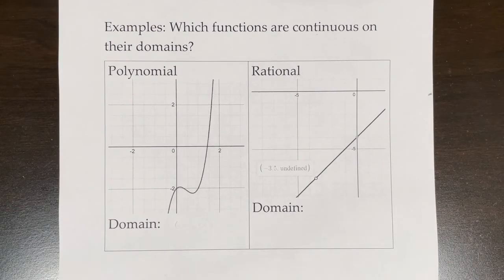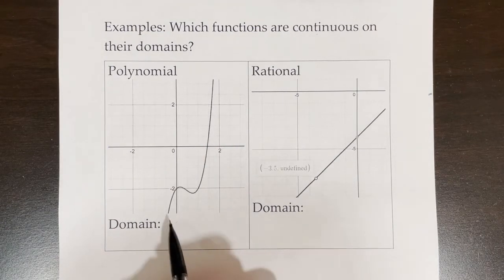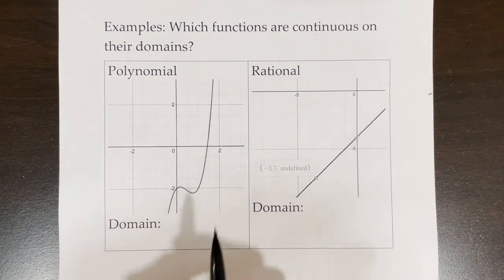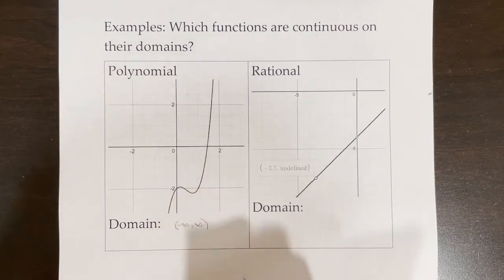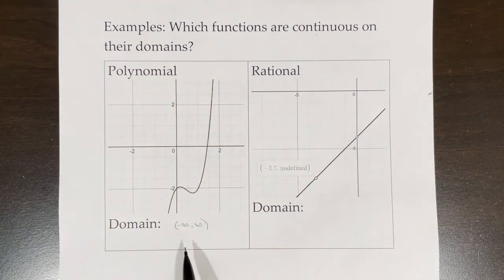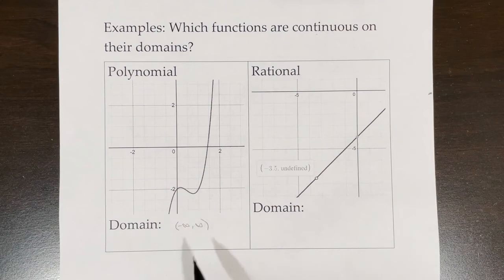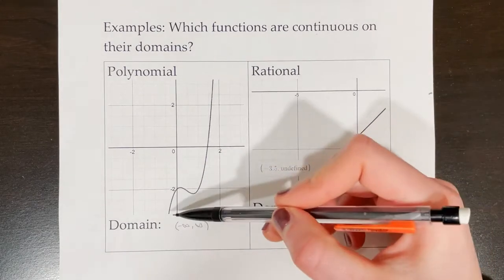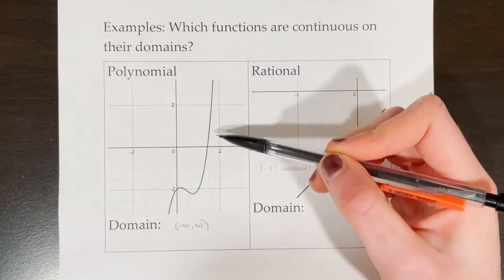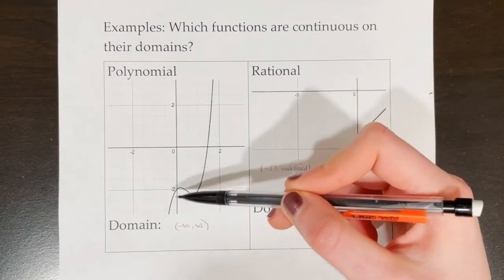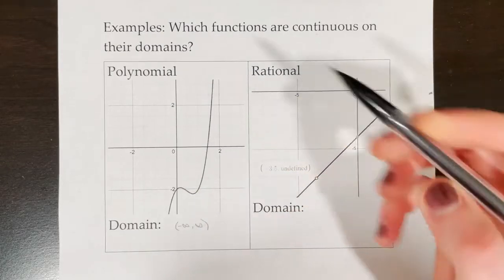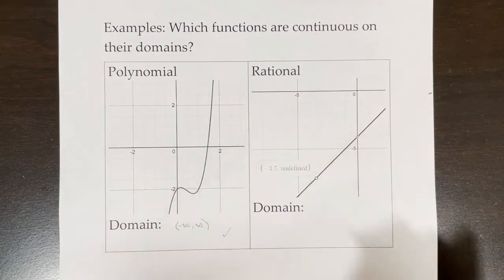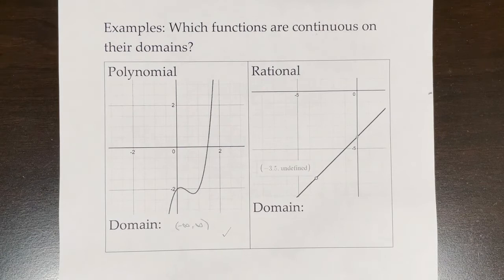First we need to identify what the domain is. For a polynomial function, the domain is negative infinity to positive infinity. I'm using interval notation to express my domain. Looking at the graph, this function is continuous at every point on its domain, at every point from negative infinity to positive infinity, so it is continuous on its domain.